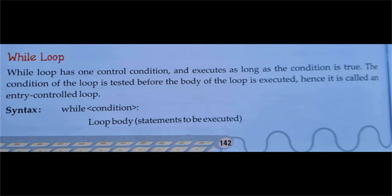The while loop has one control condition and executes as long as the condition is true. The condition of the loop is tested before the body of the loop is executed, hence it is called an entry controlled loop. Jab tak condition true hoti hai tab tak ye loop execute hota hai. Control loop ki body mein enter karne se pahle condition test hoti hai; agar true ho to hi body execute hogi, otherwise loop se bahar aa jayega.